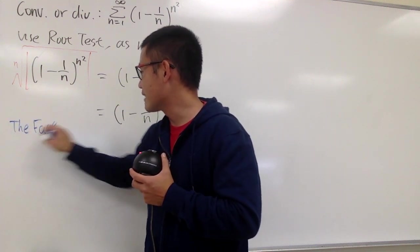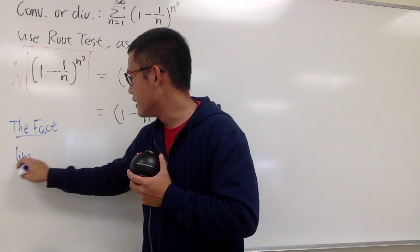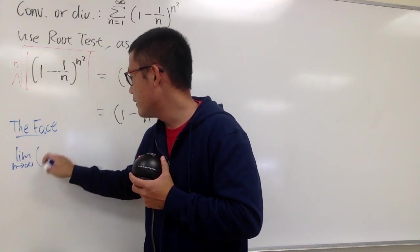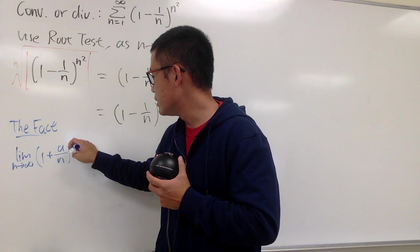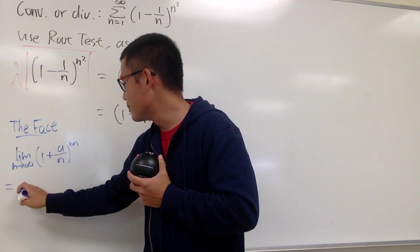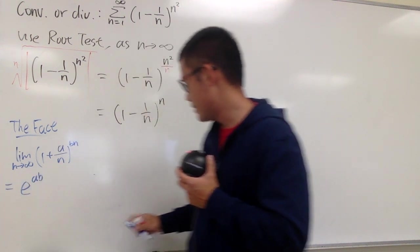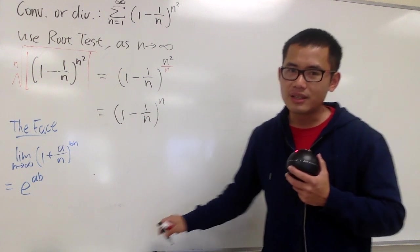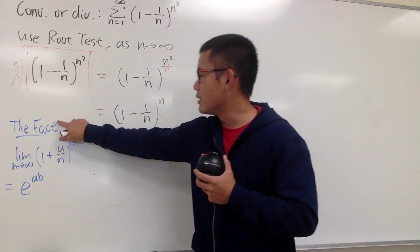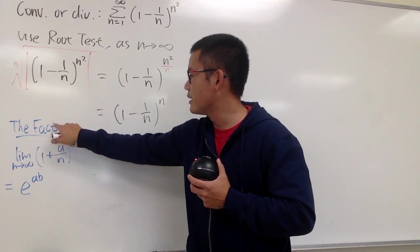Here is the fact. The limit as n goes to infinity, 1 plus a over n raised to the bn power, this is going to be e to the ab power. And you can also check out the video if you want to see how we can derive that. This is the fact, by the way.